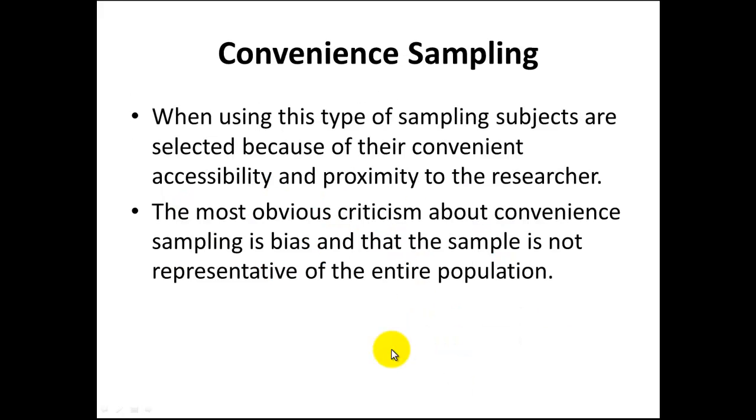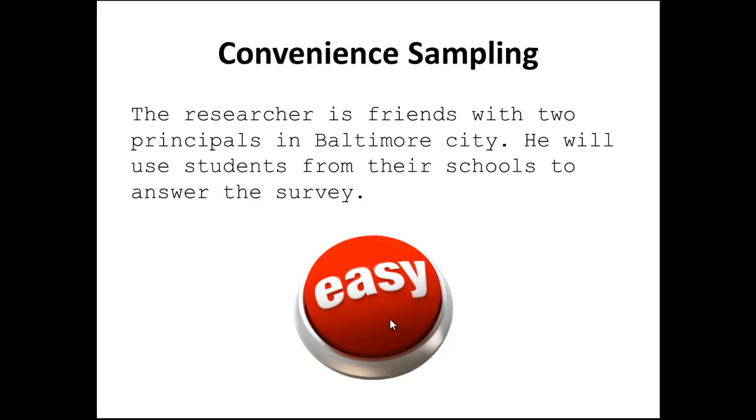Our final sampling technique is to use what's called a convenient sampling. I think the name says it all here. It's just a type of sampling that's used because of the convenient nature of the data or the accessibility of the data. The most obvious criticism of this type of sampling is often it's not representative of the entire population. Let's suppose that our researcher, with this question about marijuana use in high school students, is friends with two principals in Baltimore City and basically he'll use the students from their schools to answer the survey. It's very convenient for the researcher, but I don't really think that these two high schools in Baltimore City would be very representative of the entire state of Maryland.